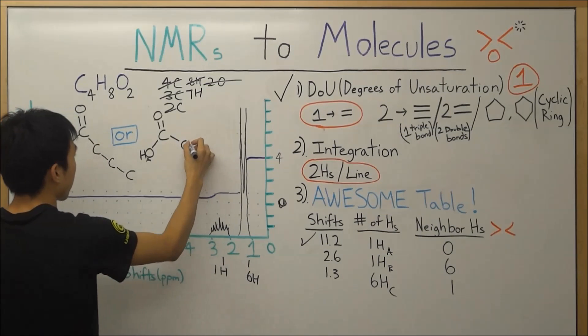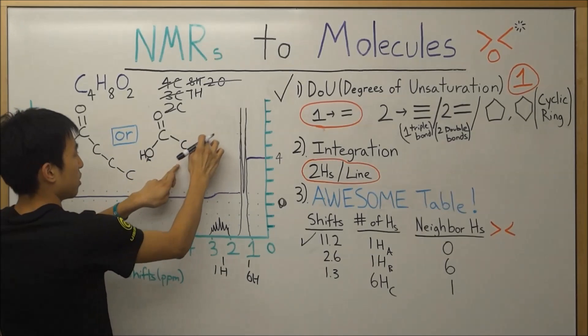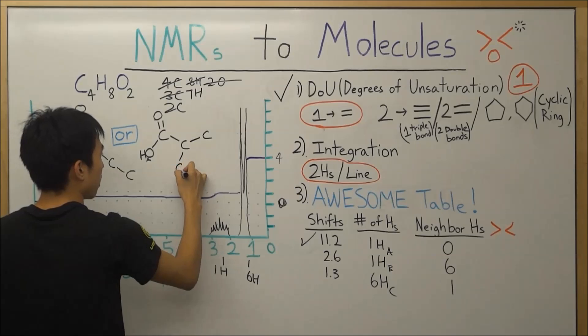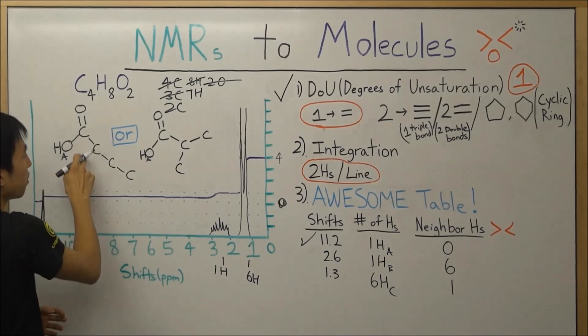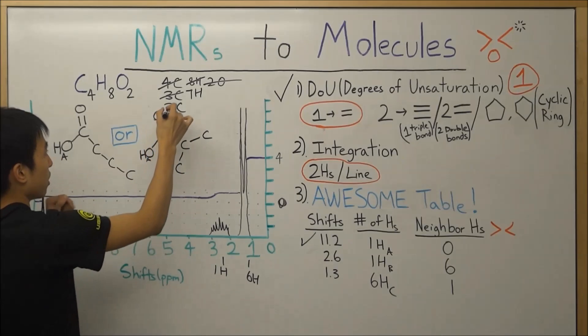Or we can have this structure over here, where you basically have these two carbons over here branch out at this carbon. Because that's our other possibility. And then after that, you see both of these fulfill the two missing carbons that we are lacking.